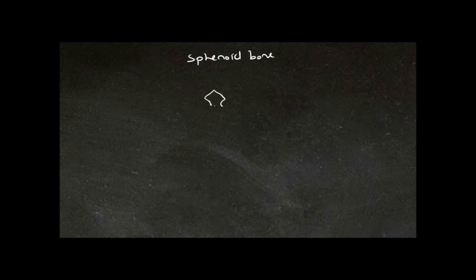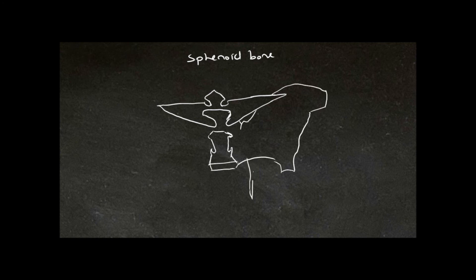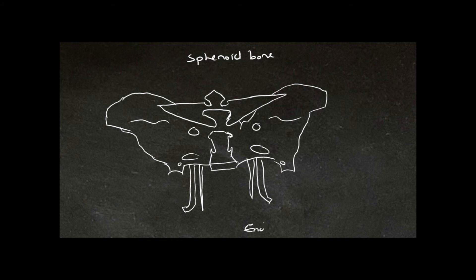Here I'm drawing a composite view of the endocranial surface or posterior surface of the sphenoid bone. So just as there was a greater wing, there's also a lesser wing of the sphenoid bone.